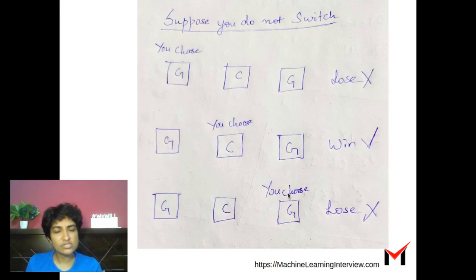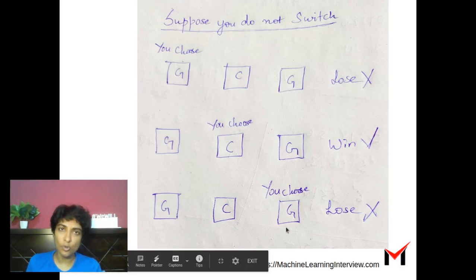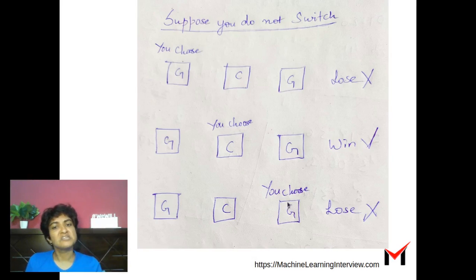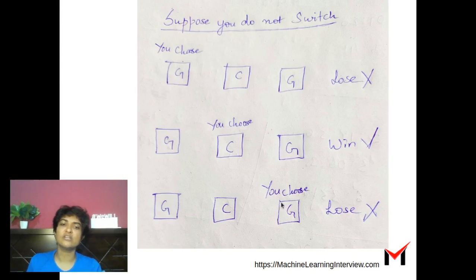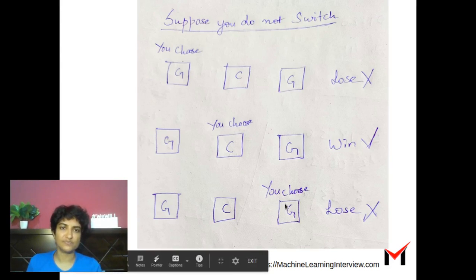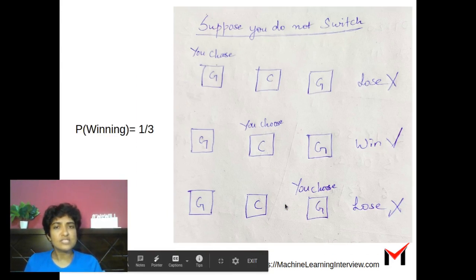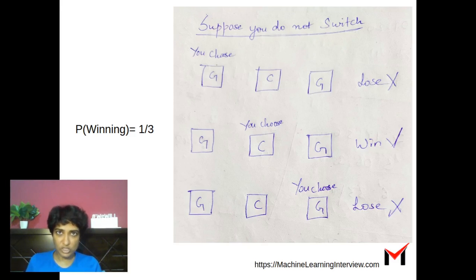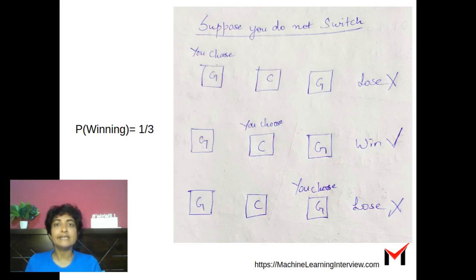If you choose the third door, which has a goat, you are going to lose because the host will reveal the other goat but you're not switching to the car. So to sum it up, if you do not switch, out of three possible cases there is only one case in which you win. Hence, the probability of winning is one-third if you do not switch.